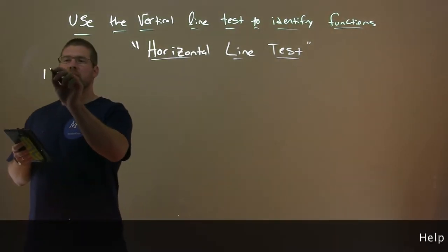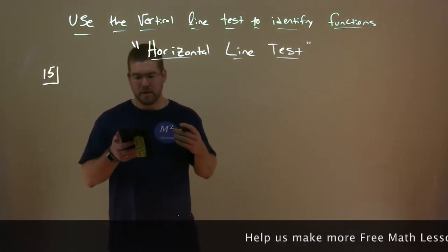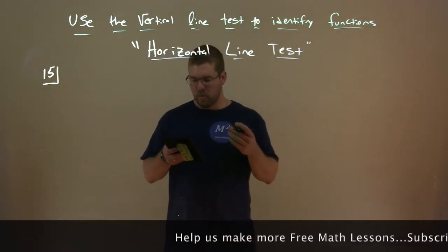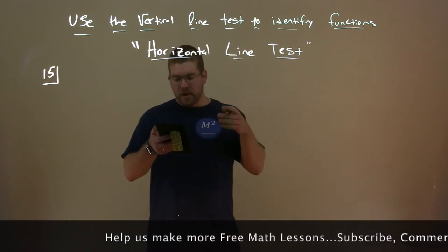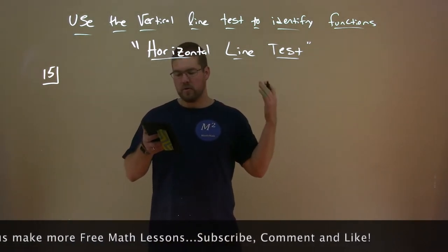So example 15 here, we'll consider two functions and we're going to see if they are one-to-one. Well, one-to-one is a function. A function is one-to-one if it passes what we call the horizontal line test.